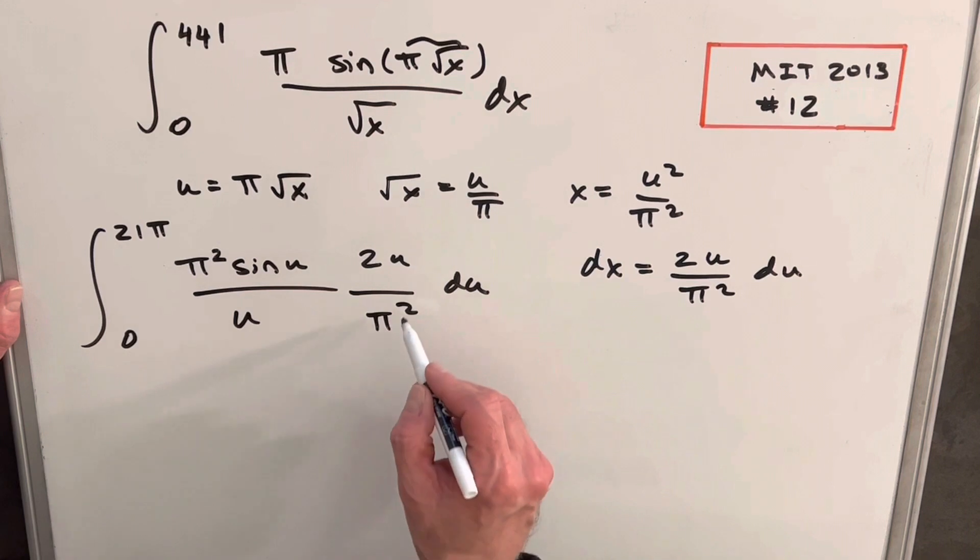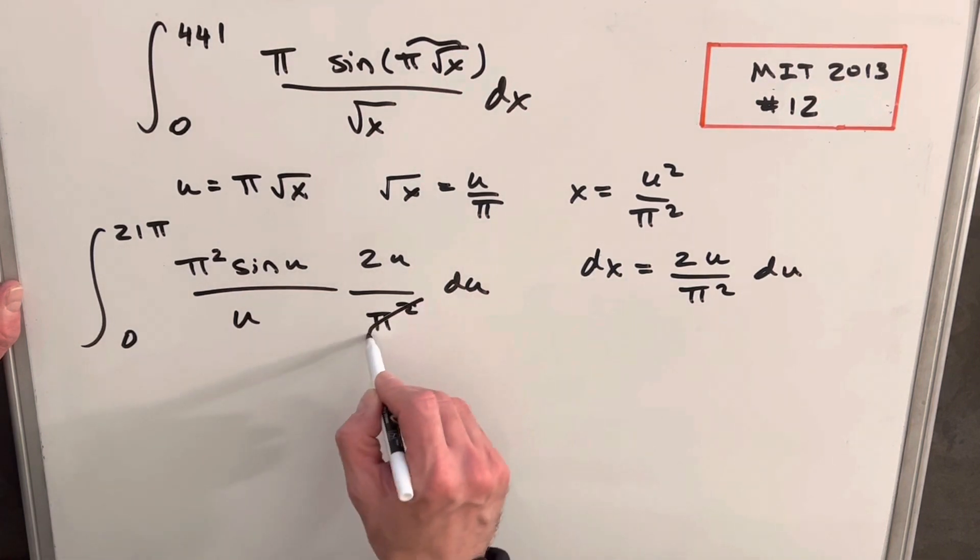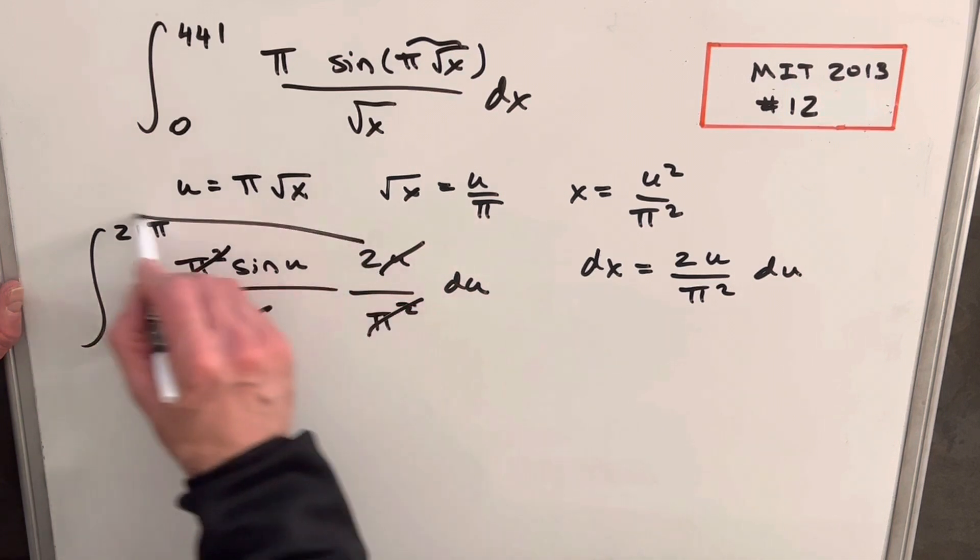And that's going to give us some nice cancellation, right? Pi squared, pi squared, gone. u, u, gone.